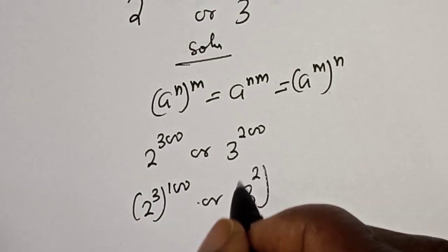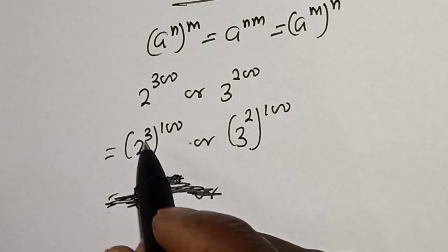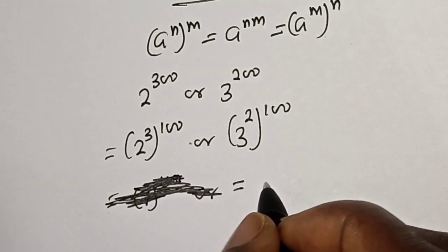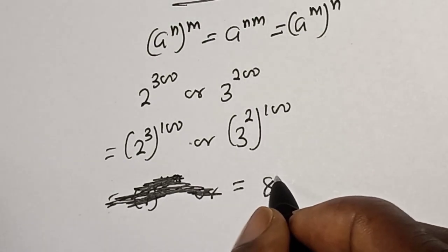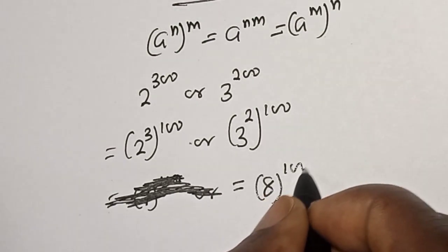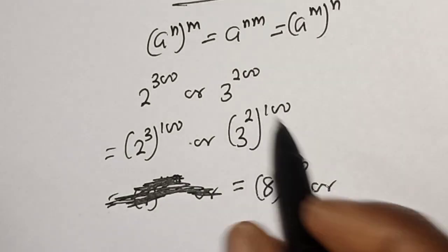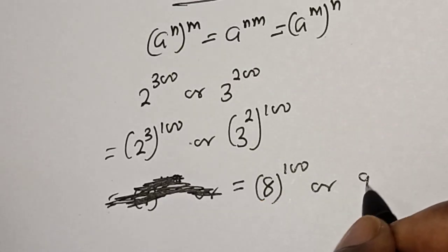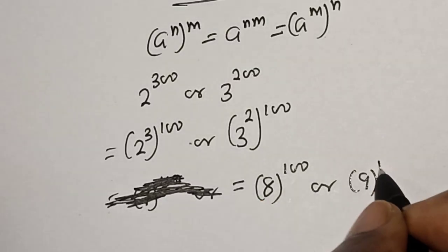2 raised to power 3 is 8 to the power of 100, or 3 raised to power 2 is 9 to the power of 100.